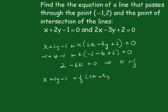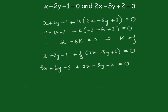So that becomes x + 2y - 1 + 1/3(2x - 3y + 2) = 0. I'm going to multiply this throughout by 3 to get rid of this one. So this becomes 3x + 6y - 3 + 2x - 3y + 2 = 0. And our final equation in general form becomes 5x + 3y - 1 = 0.